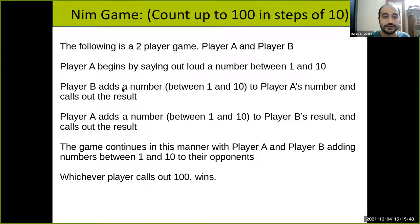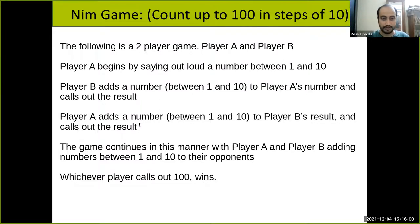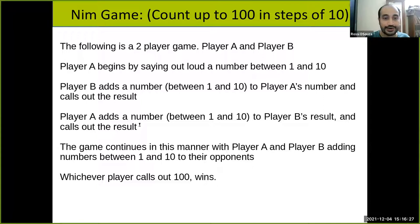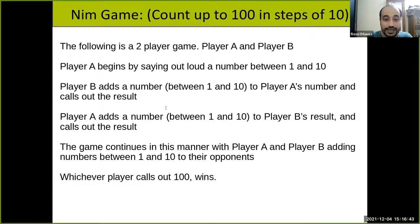Interesting! To reach 100 it is enough to reach 78, and to reach 78 it is enough to reach 67. Bishal has observed the pattern: to reach 100, it suffices to reach 89, then 78, then 67, then 56, 45, 34, 23, 12, and 1. So now we see a particular winning strategy. Bishal, would you like to play now that you've figured something out?